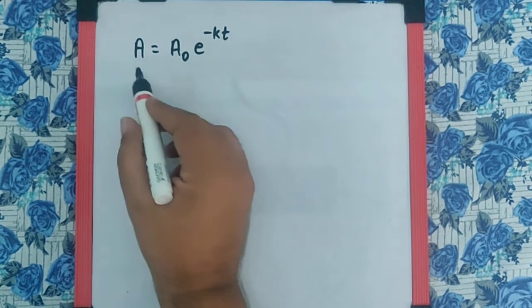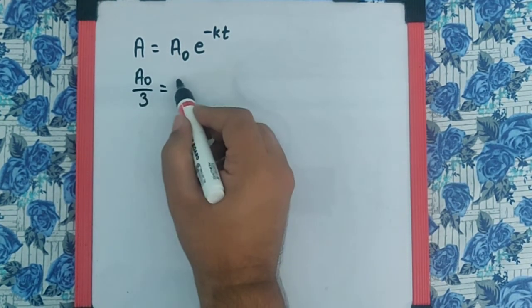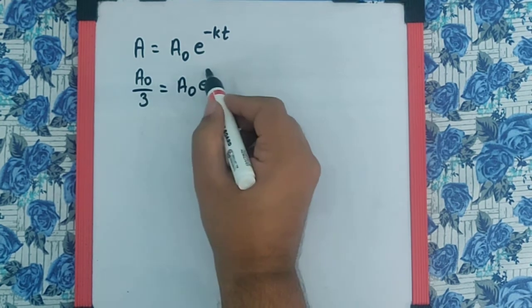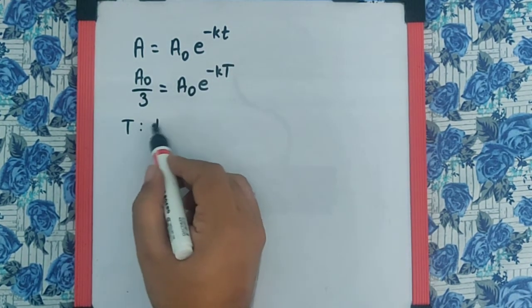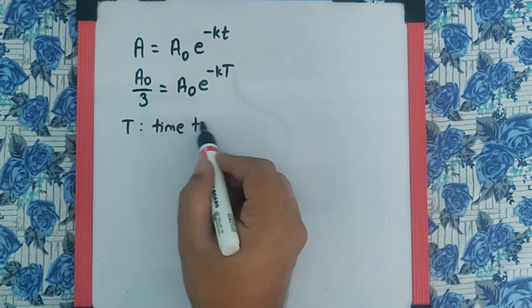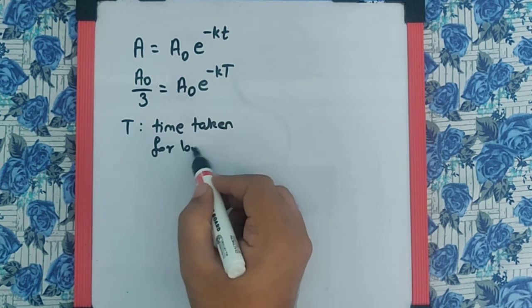In the first case, we can say A becomes A₀ by 3, one third A₀ e raised to minus kT, where I assume T is the time taken for 100 oscillations.